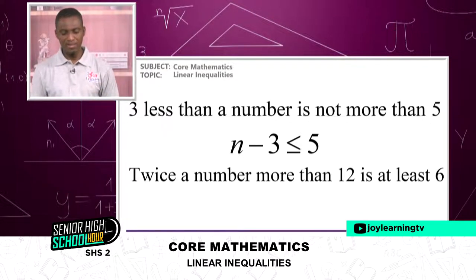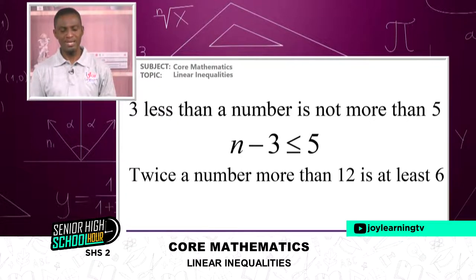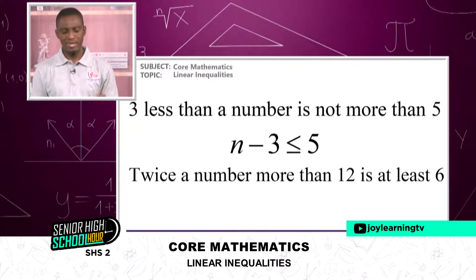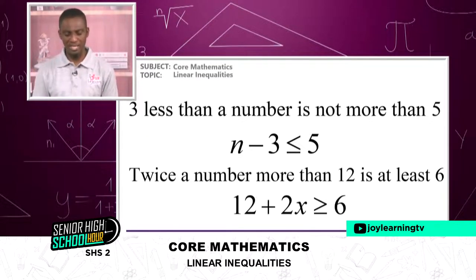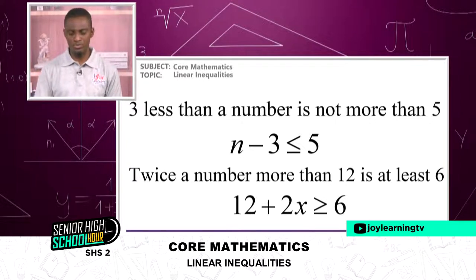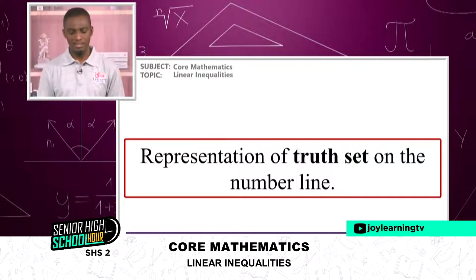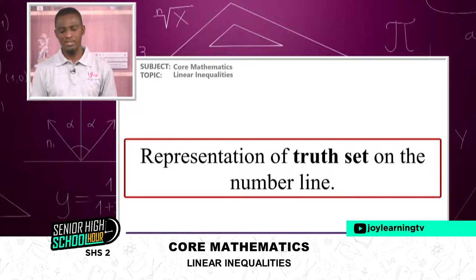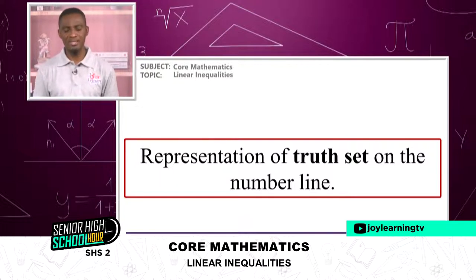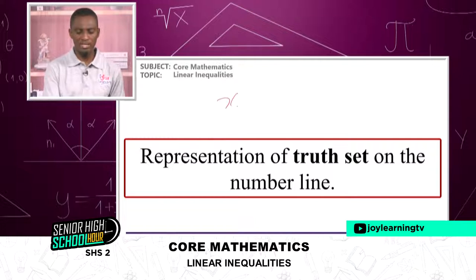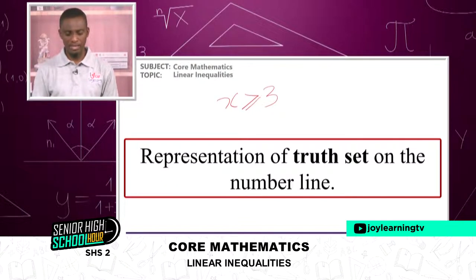'Twice a number more than 12 is at least six' can be written as 12 + 2n ≥ 6. Now let's look at representing inequalities on a number line. For example, if x ≥ 3, how do you represent this on a number line? That is what we want to look at.